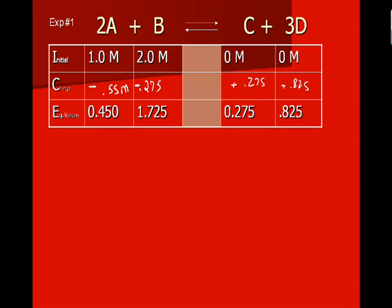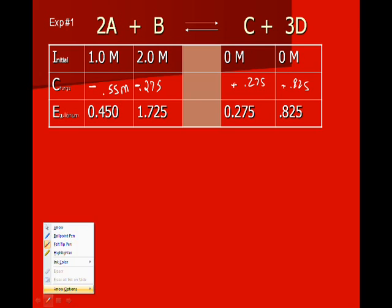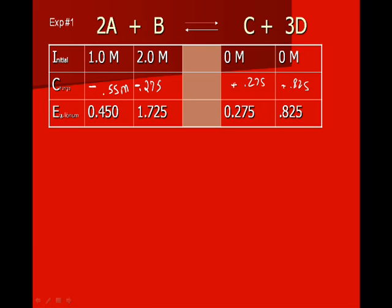What you're going to get very used to setting up when we do equilibrium problems is something called an ICE box. The ICE box is a table that helps us organize information. The ICE is really important: I stands for initial concentration, C stands for change, and E stands for the concentrations after the system has come to equilibrium—the concentration after the forward and reverse reactions are the same.